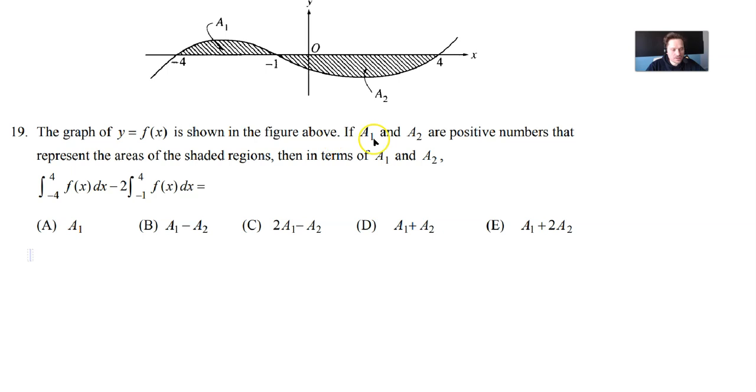The graph of y equals f of x is shown in the figure above. If A₁ and A₂ are positive numbers that represent the areas of the shaded regions, then in terms of A₁ and A₂, find the value of this expression that consists of two integrals.